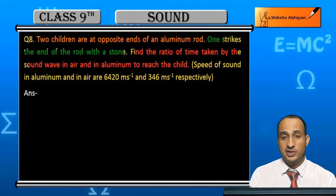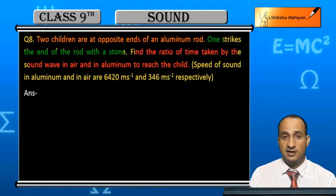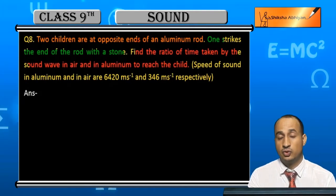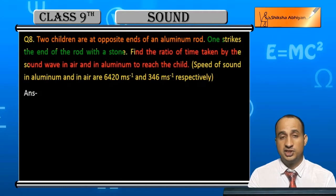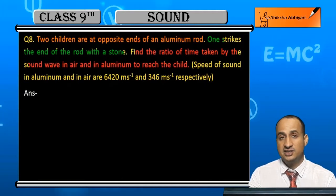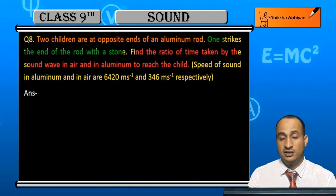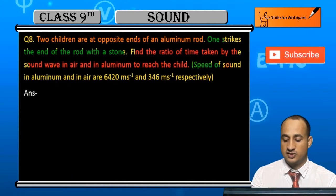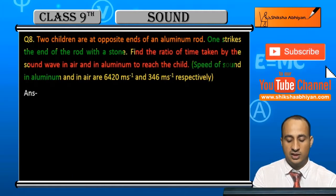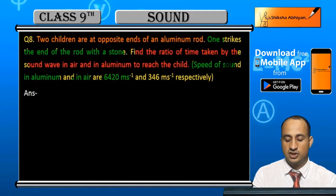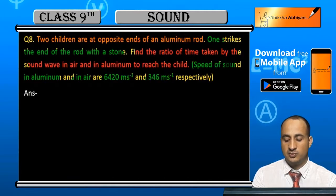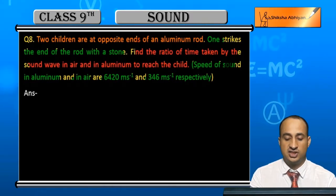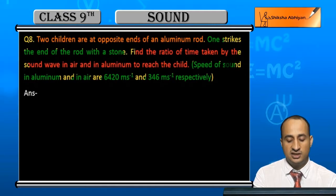One child hears the sound from the stone, so the sound will travel through both the aluminum rod and the air. The other child will receive sound from both sides. The speed of sound in aluminum is 6420 meters per second and in air is 346 meters per second.